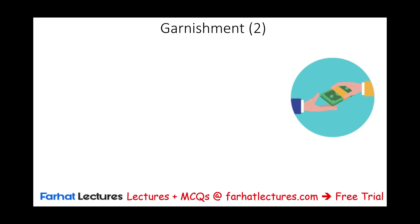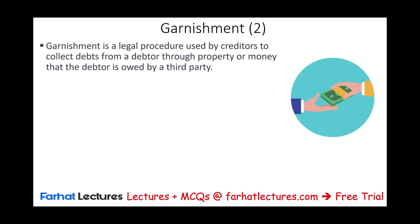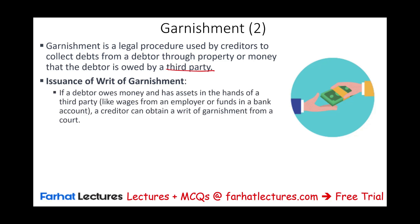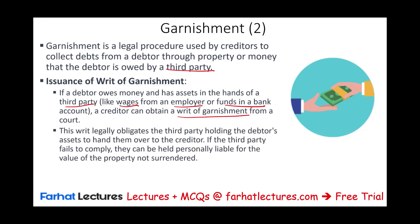Another legal method is something called garnishment. This is a legal procedure used by creditors to collect debt from the debtor through property or money that the debtor is owed by a third party — such as employment wages or funds in a bank. There is an issuance of a writ of garnishment, basically a court order. If the debtor has assets in the hands of a third party, the creditor can obtain a writ of garnishment from a court, which legally obligates the third party to hand those assets over to the creditor. If the third party fails to comply, they can be held personally liable for the value of the property not surrendered.